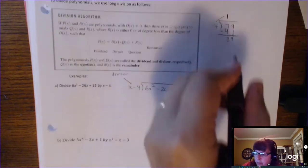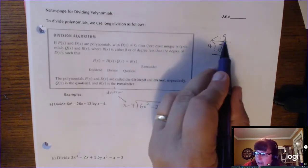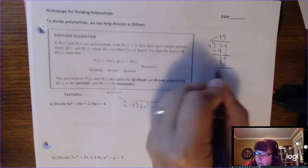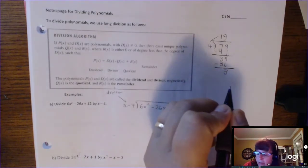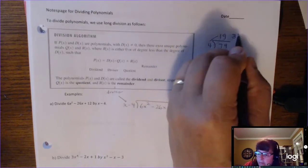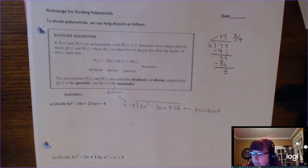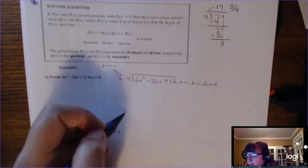4 goes into 39 nine times. Then you multiply: 4 times 9 is 36. Draw your line and subtract, and you get a remainder of 3. Sometimes you write R3, and sometimes you write the remainder over the divisor — 19 and 3 fourths. That's essentially what we're going to do here, with a couple of changes because we have variables.